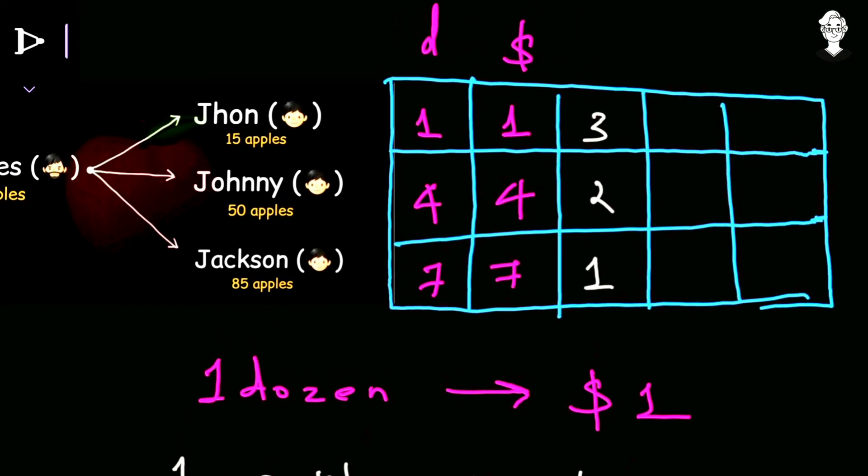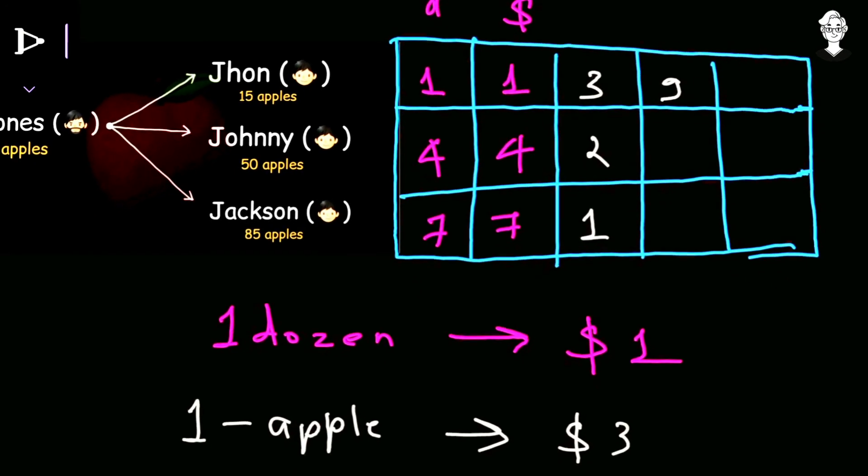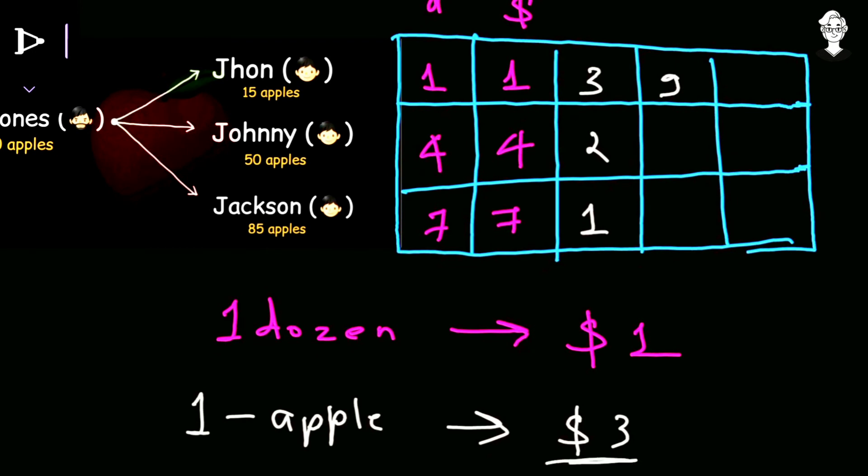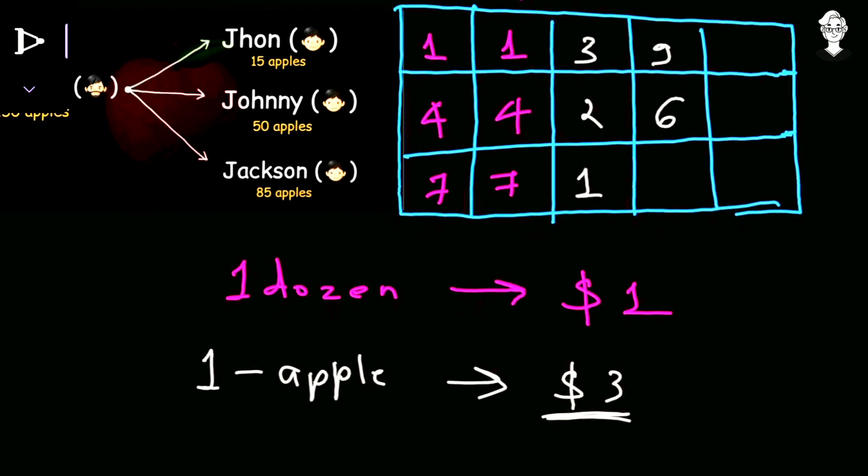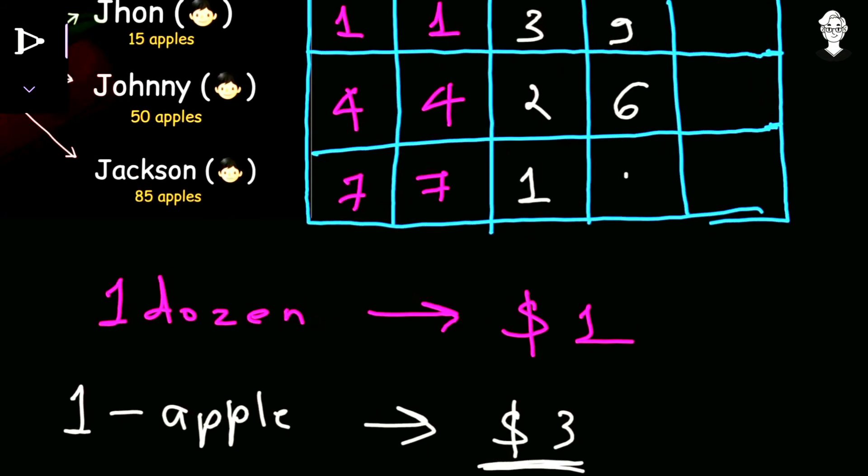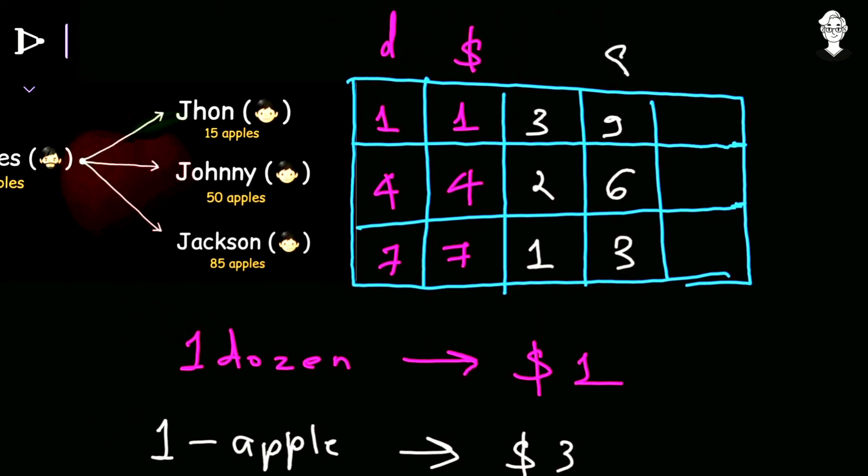As John has 3 apples, he sold 3 of them, so total amount he will receive is 3 times 3, that is $9. Johnny has 2 apples left so he will sell 2 at a price of $3, so 2 times 3 is $6. Jackson has only 1 apple left so 1 times 3 is $3.